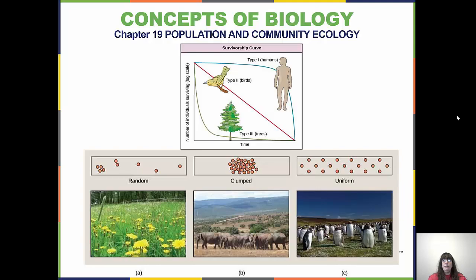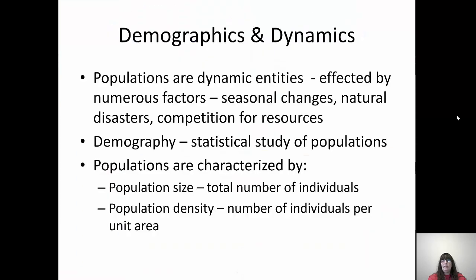Today we are going to talk about chapter 19, which is population and community ecology. For my majors, it is going to be chapter 45. Demography is the statistical study of populations — the way we gather information about things like rural versus urban population, what areas are more populated, the pattern of population, and life expectancy. This is part of my area of expertise; I am technically a behavioral evolutionary ecologist, so please don't hesitate to ask questions.